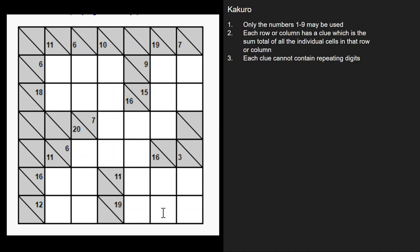Now there could be repeating digits across an entire row but not for a clue. So for instance if there's a 4 here, there could be a 4 over here as well. It just can't have two 4s in the same clue. I hope that makes sense.